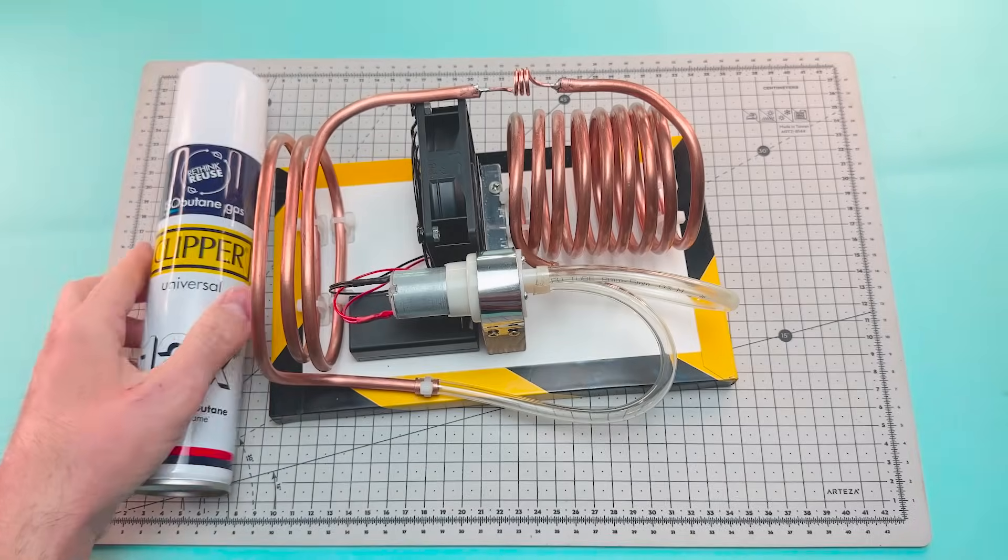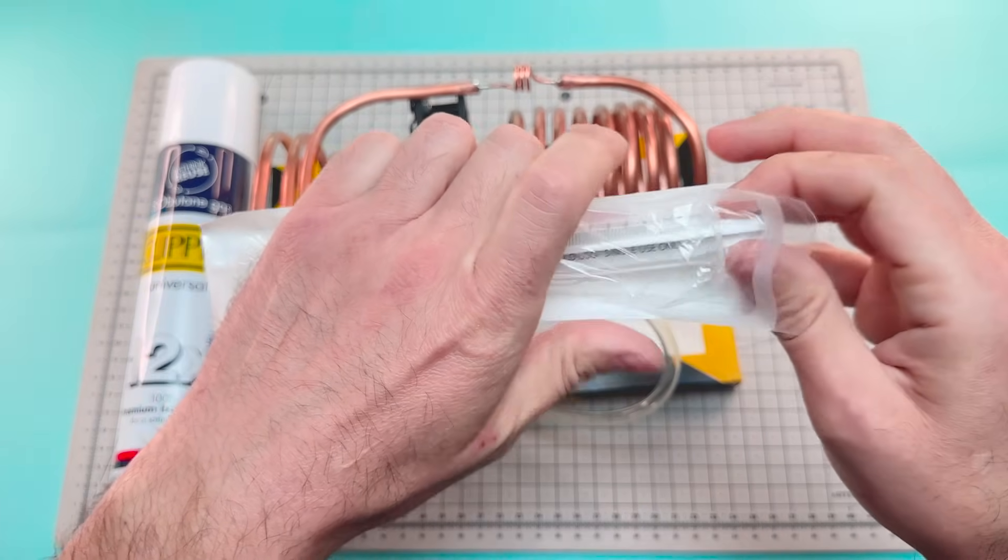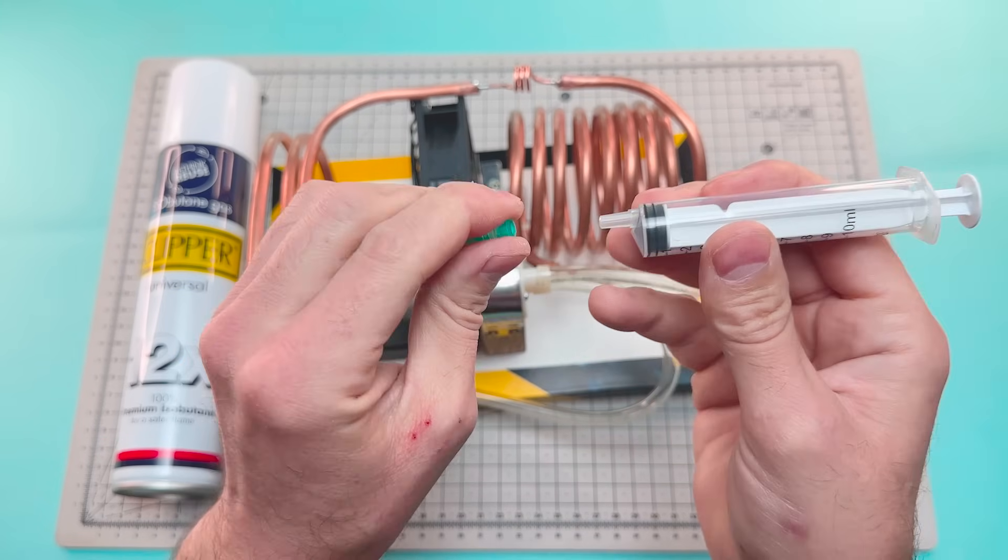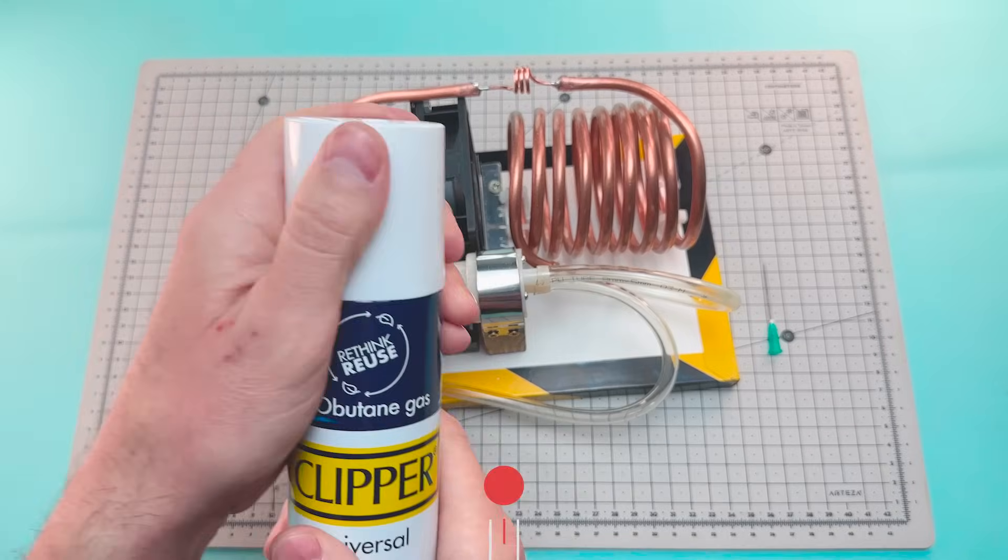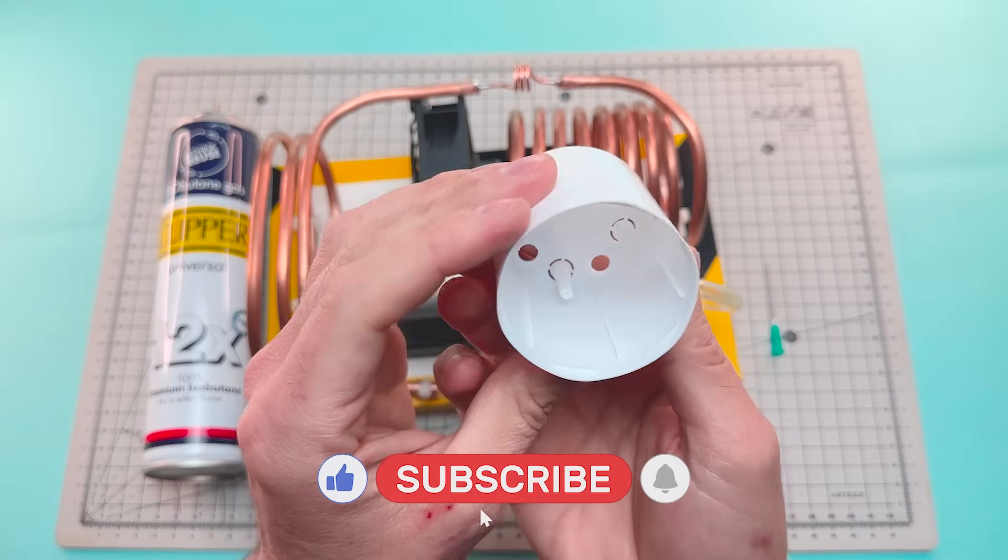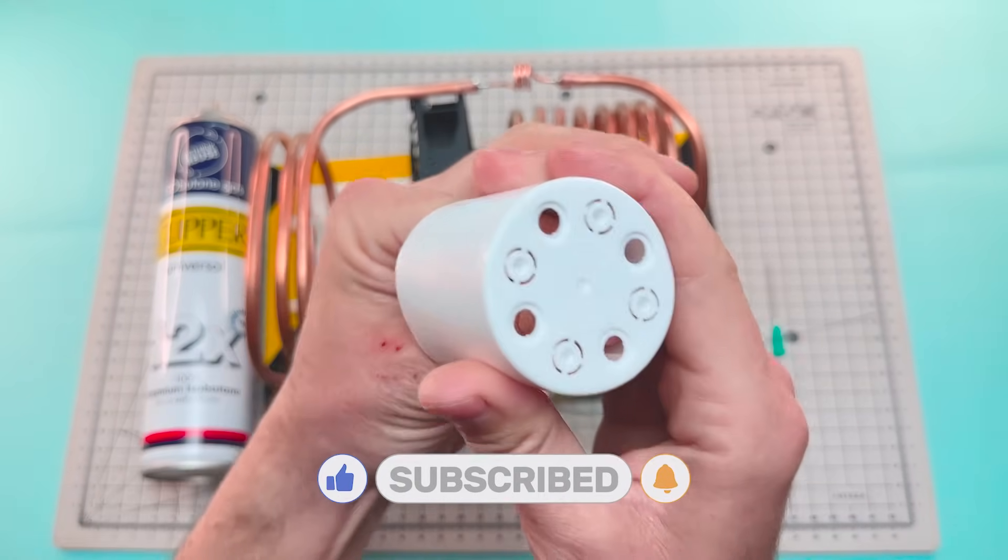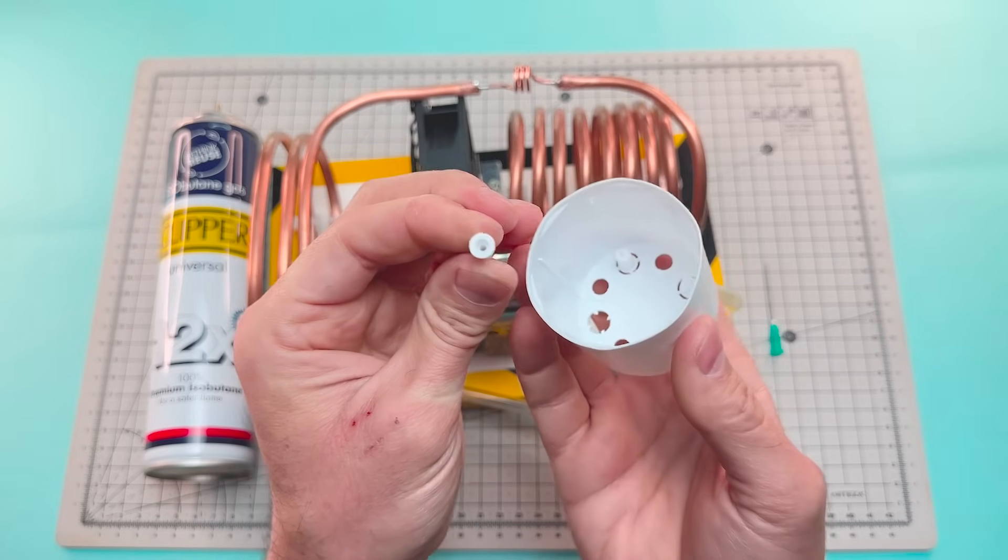We'll use a syringe to inject the gas into the circuit. When isobutane changes from liquid to gas, it needs energy to do so. And that energy is drawn from the heat in the surrounding air. That heat transfer is what cools the system.